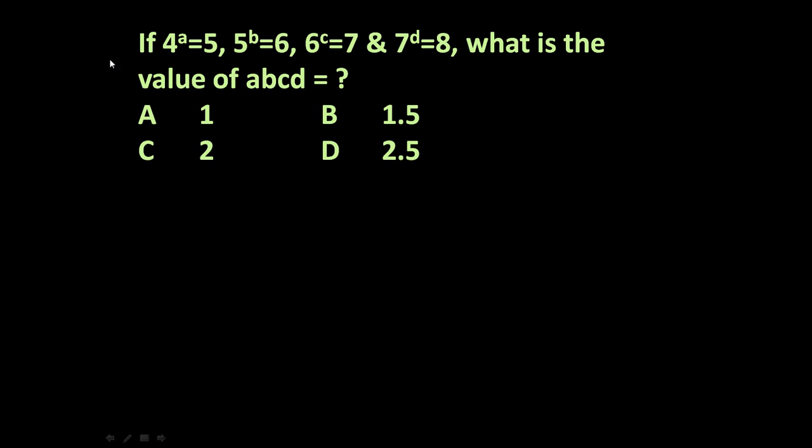Here the given problem is: if 4 raised to the power a equals 5, 5 raised to the power b equals 6, 6 raised to the power c equals 7, and 7 raised to the power d equals 8, what is the value of abcd? The options are: A) 1, B) 1.5, C) 2, D) 2.5.